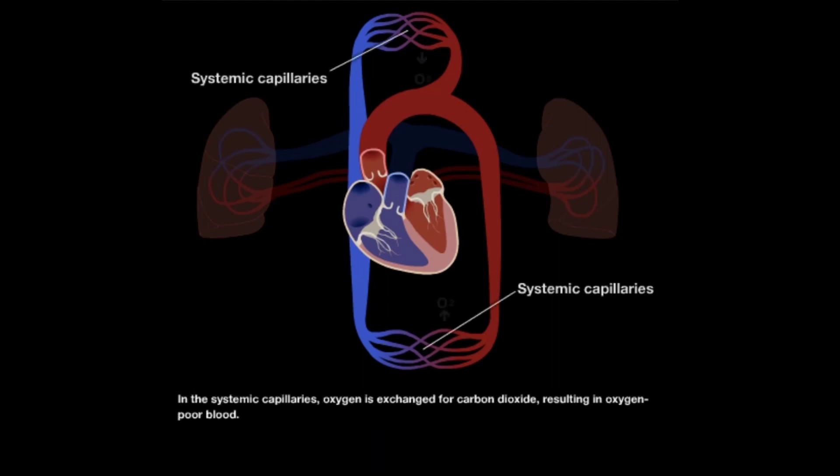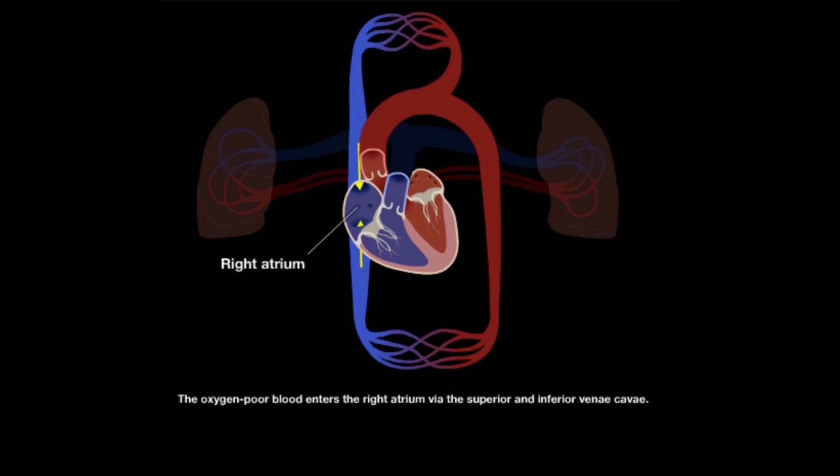In the systemic capillaries, oxygen is exchanged for carbon dioxide, resulting in oxygen-poor blood. The oxygen-poor blood enters the right atrium via the superior and inferior vena cava.